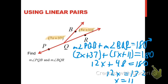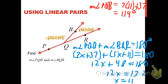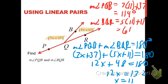To find the actual angle measures, we substitute x = 11 into each expression. The measure of angle PQB is 7(11) + 37 = 77 + 37 = 114 degrees. You could subtract from 180 to find angle BQR, but I prefer you substitute: 5(11) + 11 = 55 + 11 = 66 degrees. And indeed, 114 + 66 = 180, so we know our algebra is correct.